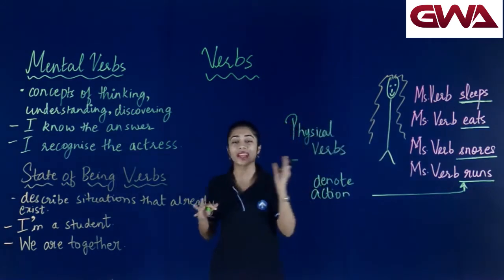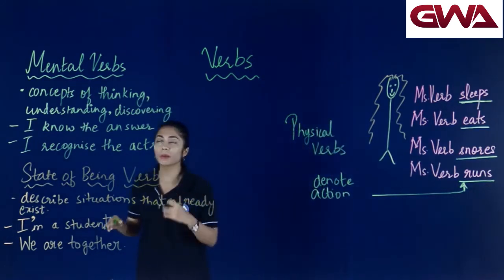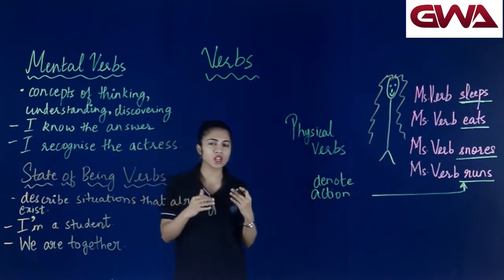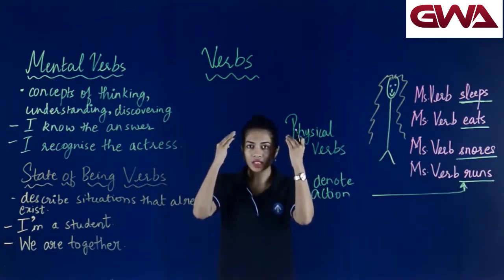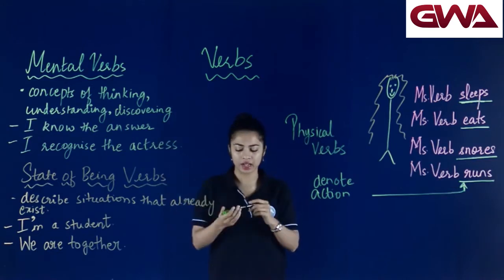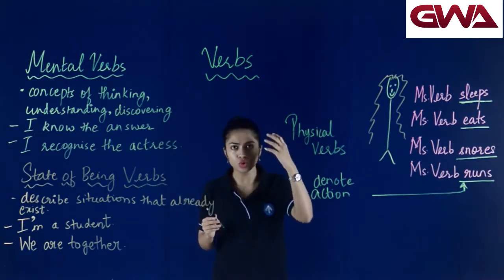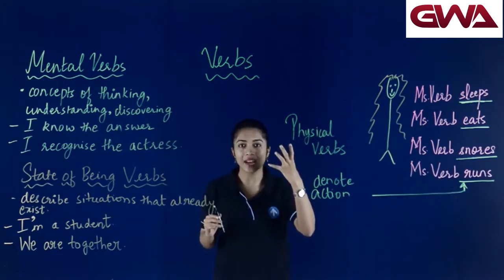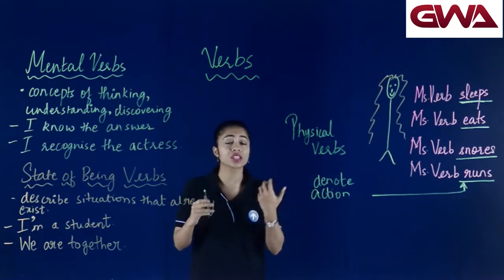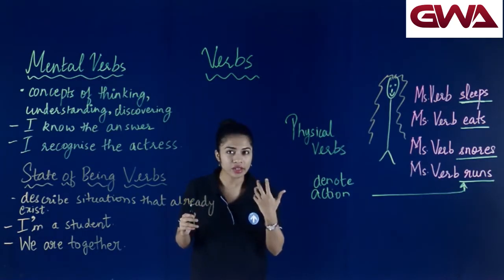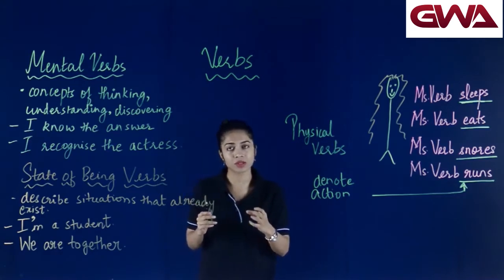Let's move on to our next type of verb, which is mental verbs. Mental verbs basically involve concepts relating to thinking, discovering, and understanding — जिस चीज को मैं सोचूँ, जिस चीज को मैं understand करूँ, किसी चीज को discover करूँ — उसके लिए मैं mental verbs का इस्तमाल करूँ।